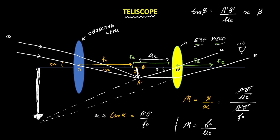So, this is the formula for magnification in the case of a telescope. I hope you are now clear with the ray diagram of the telescope and how we find the magnification. See you in the next video. Bye-bye!